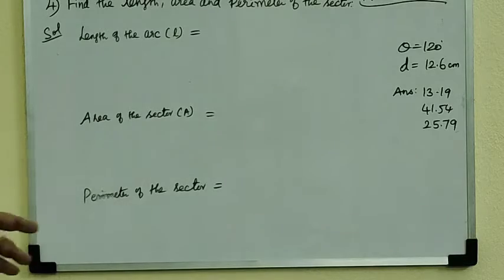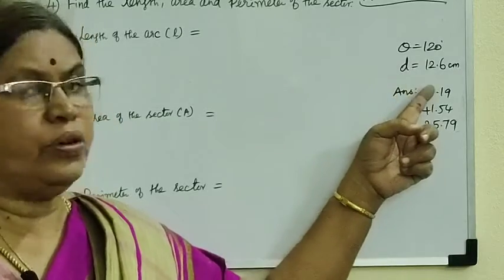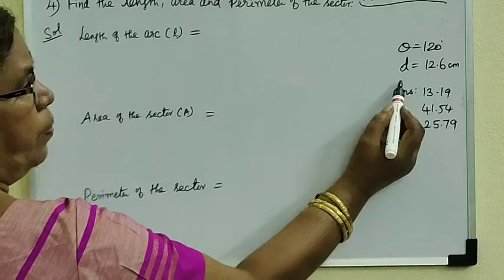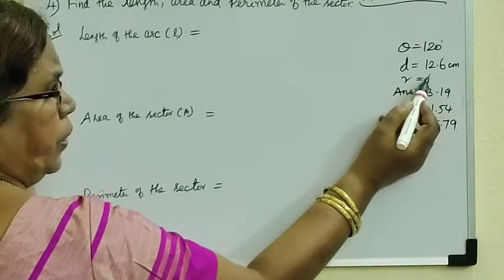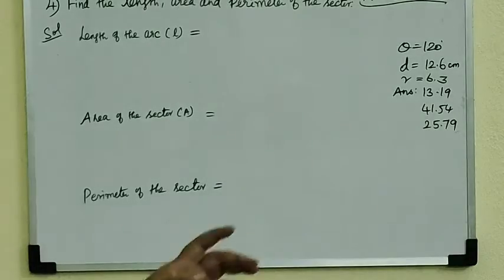Now fourth question subdivision 2. Theta value 120 degrees, diameter 12.6. Diameter 12.6, radius 6.3.